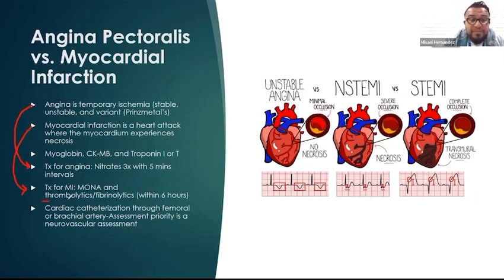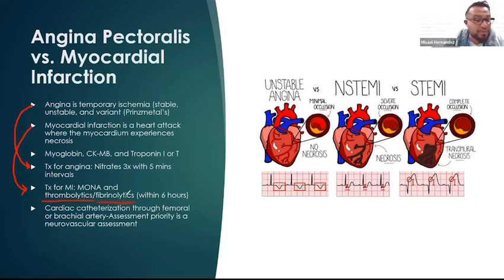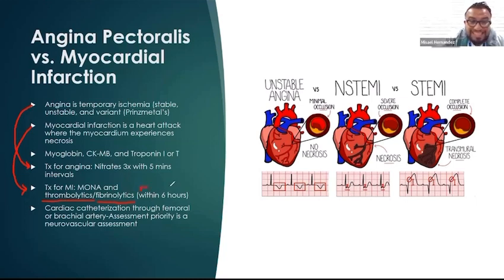For medications, we give thrombolytics or fibrinolytics — drugs that dissolve blood clots. These are powerful drugs and are not to be confused with anticoagulants, which only prevent clotting. We have to give thrombolytics within six hours from the onset of chest pain.